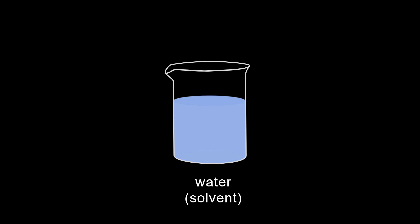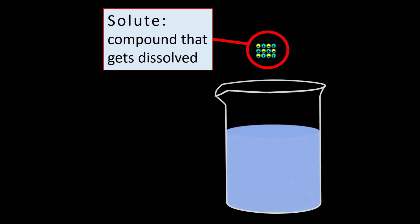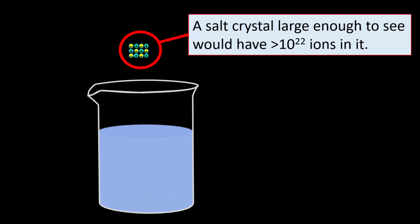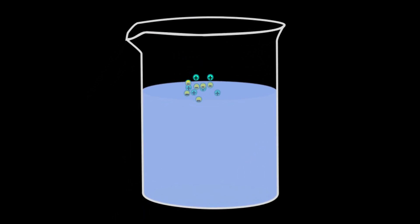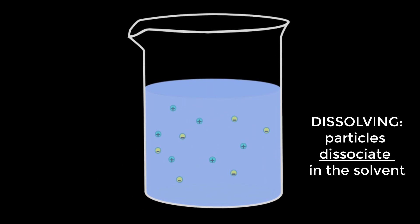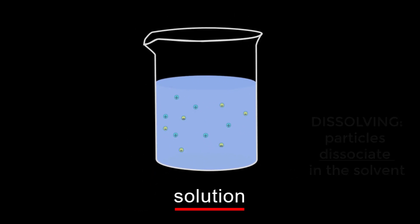Water is a solvent that people are interested in because of water's ability to dissolve a huge variety of compounds, including all of the reactants that react in living organisms to produce valuable products. A solute is the compound that gets dissolved. A salt crystal large enough to see would have greater than 10 to the 22 ions in it. When we put it in water, it splits apart. They dissociate. And here we have a solution composed of water and the dissolved particles.